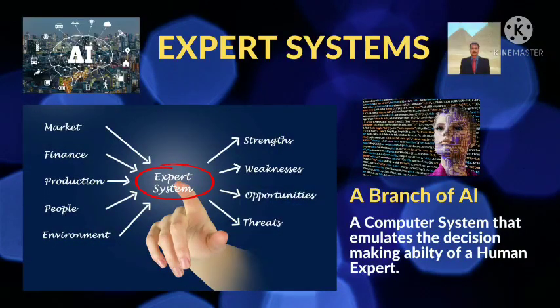Expert systems are a branch of artificial intelligence. It is a computer system that emulates or mimics the decision-making ability of a human expert in the fields of markets or marketing, finance, production, people, environment, medical systems, and many more.